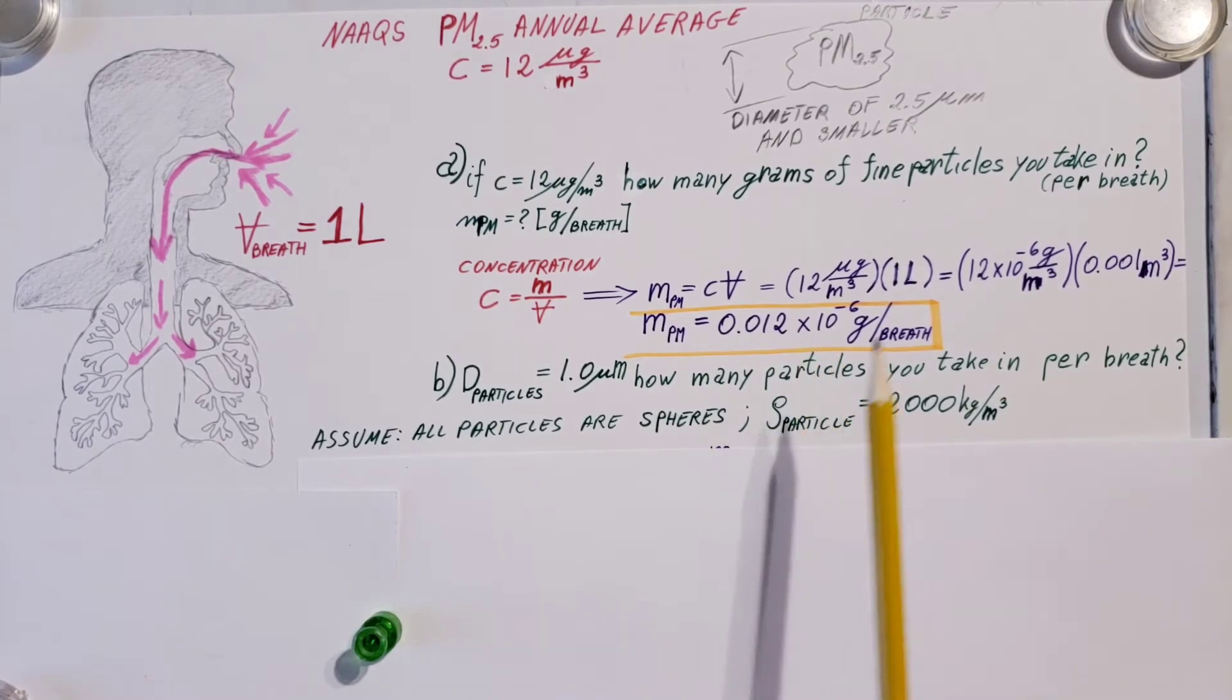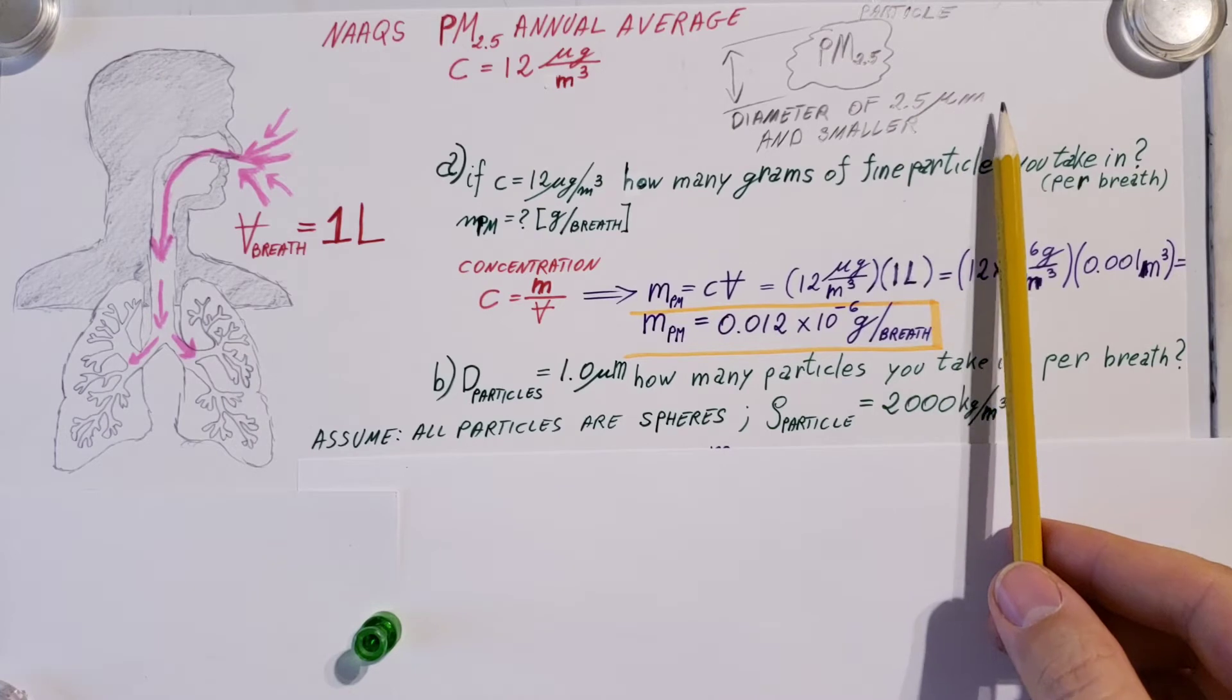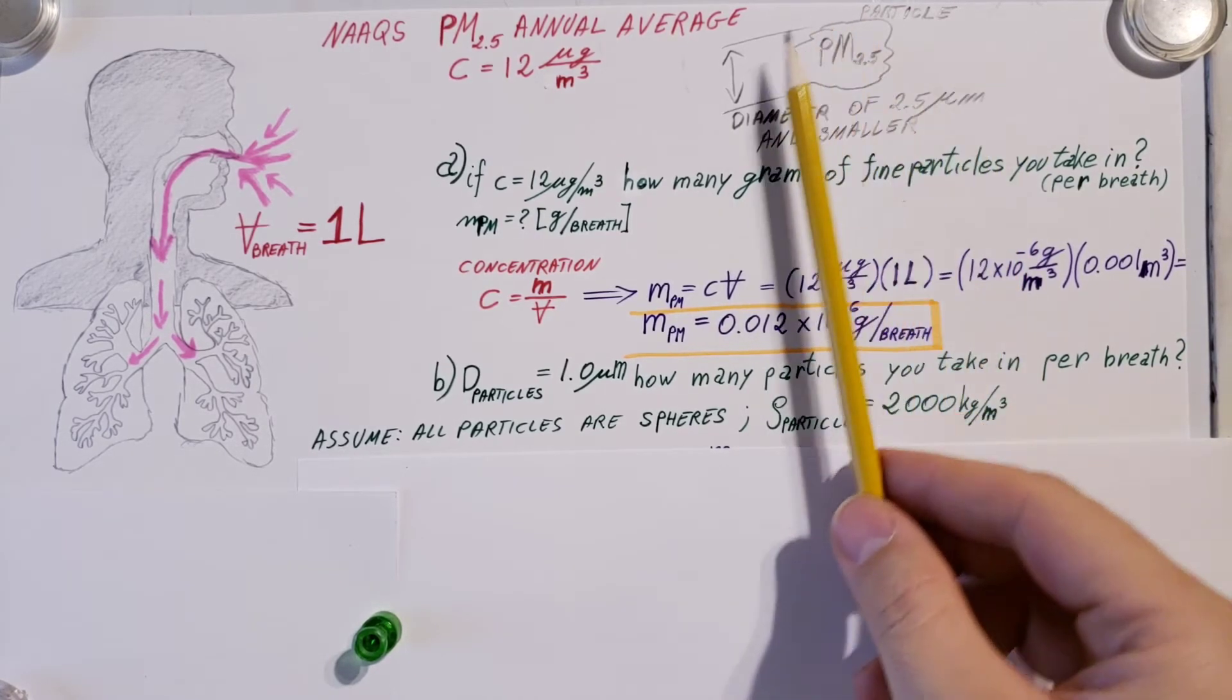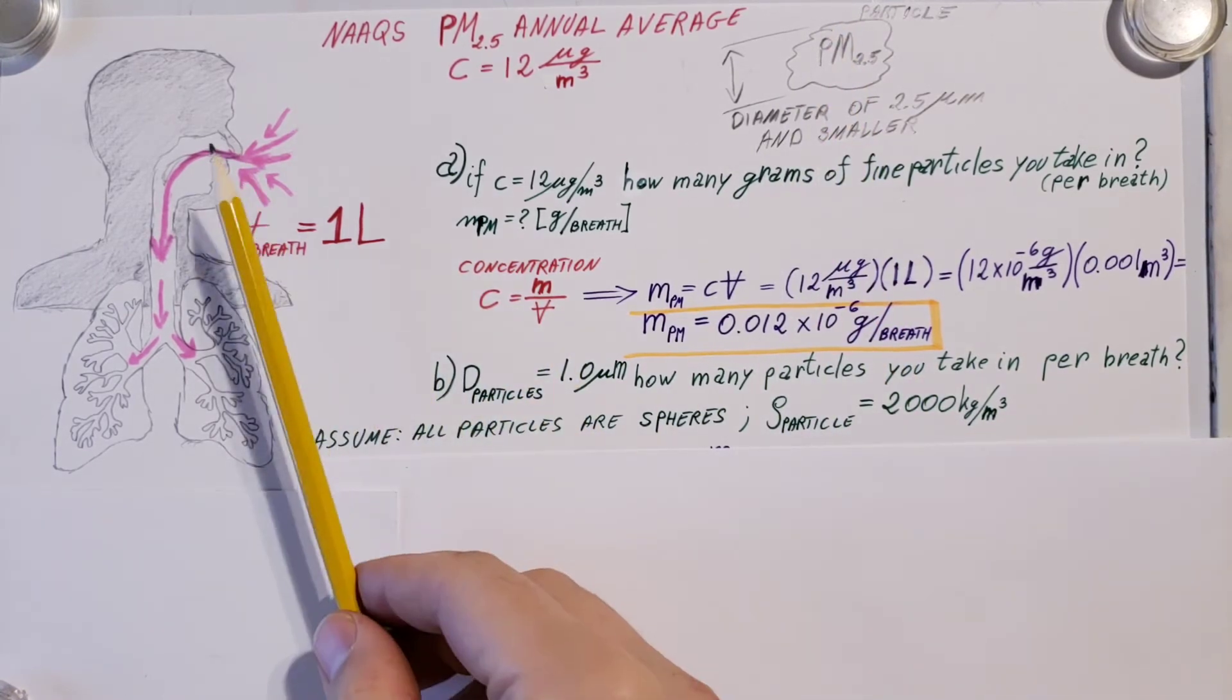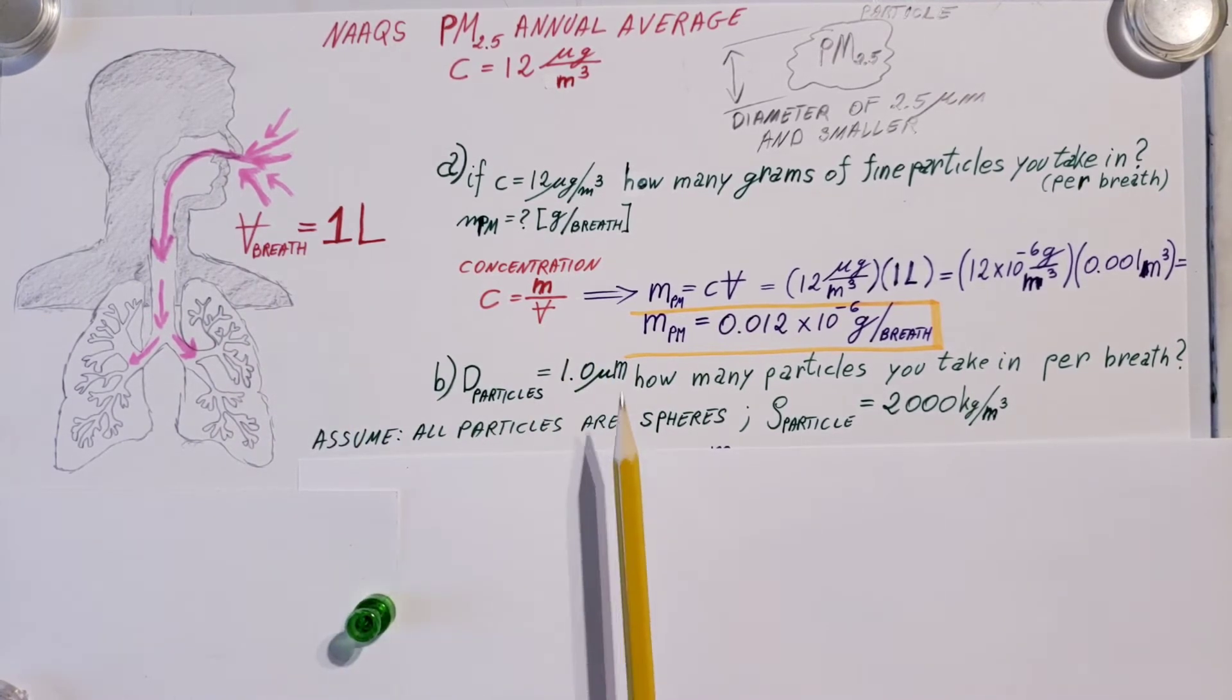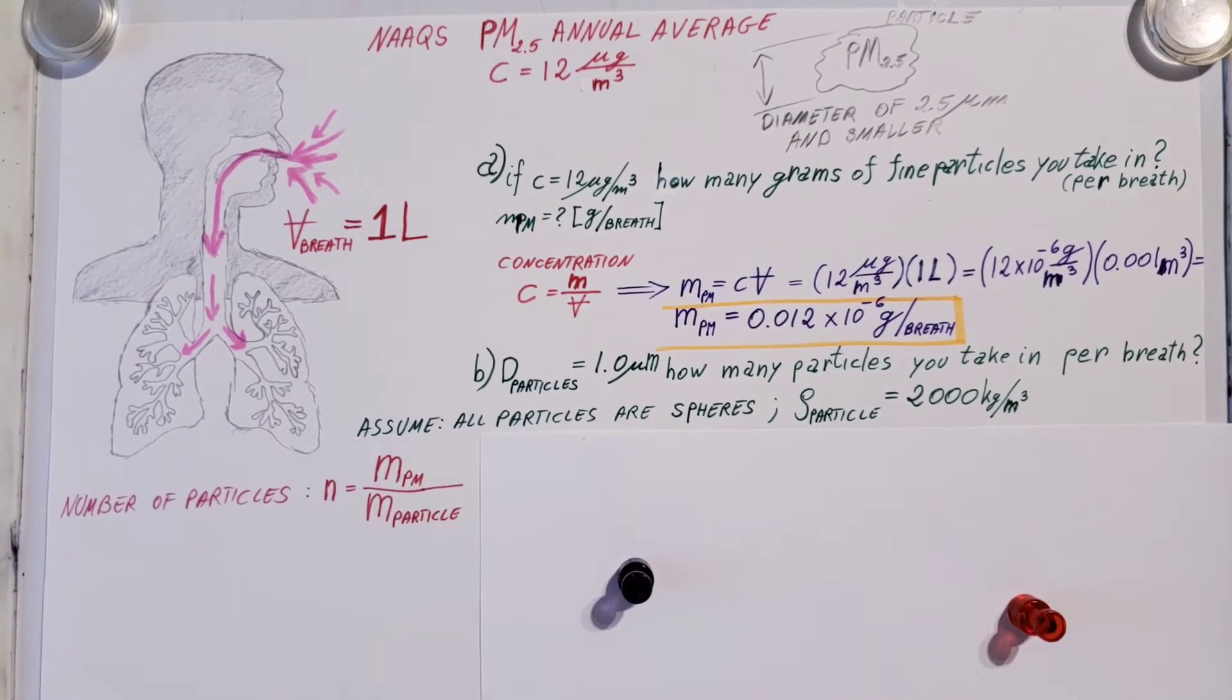For the second question, they want us to find how many particles we breathe in with each breath. They want us to assume that these particles have a diameter of about one micron. We said PM 2.5 means 2.5 microns or smaller, but here they want us to consider everything as having a diameter of one micron for ease of calculation. They also want us to assume these particles are approximately spheres with a density of 2000 kilograms per meter cubed.